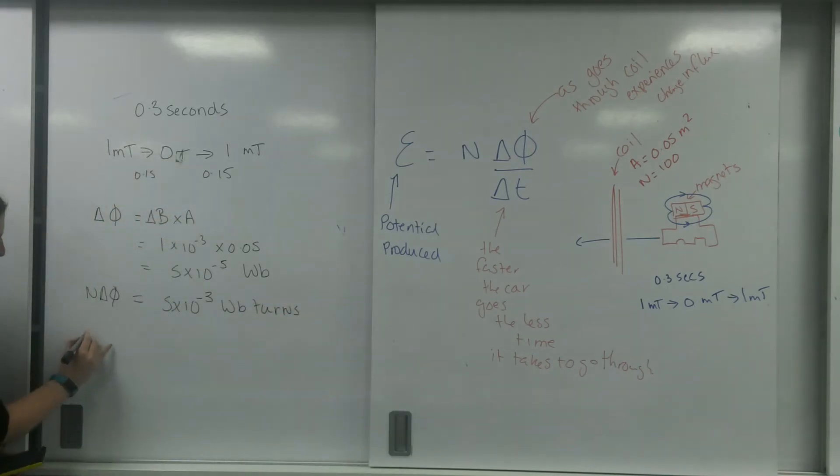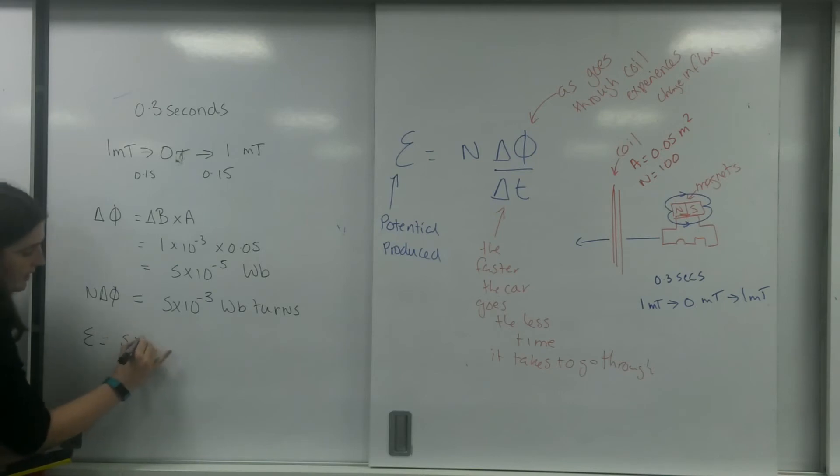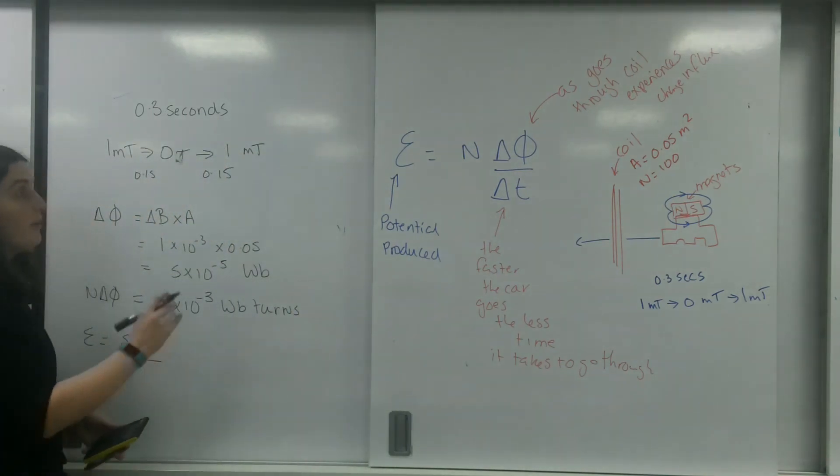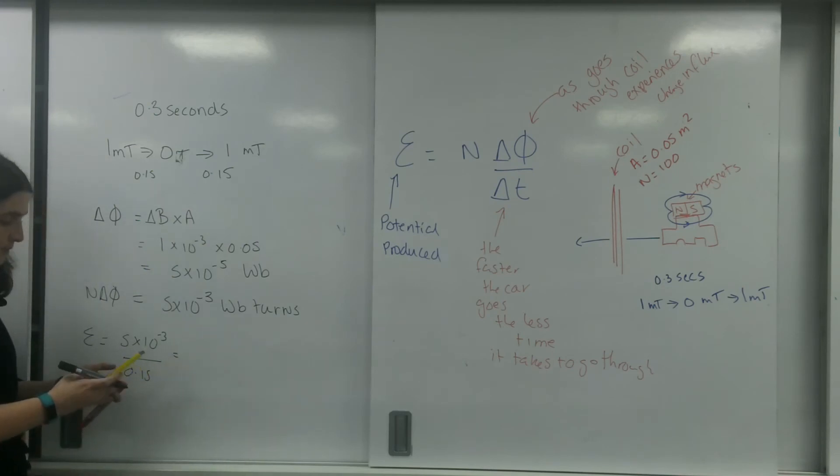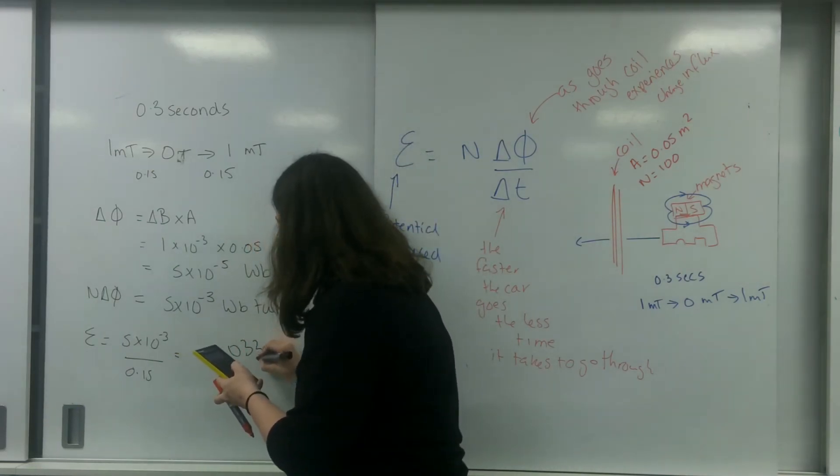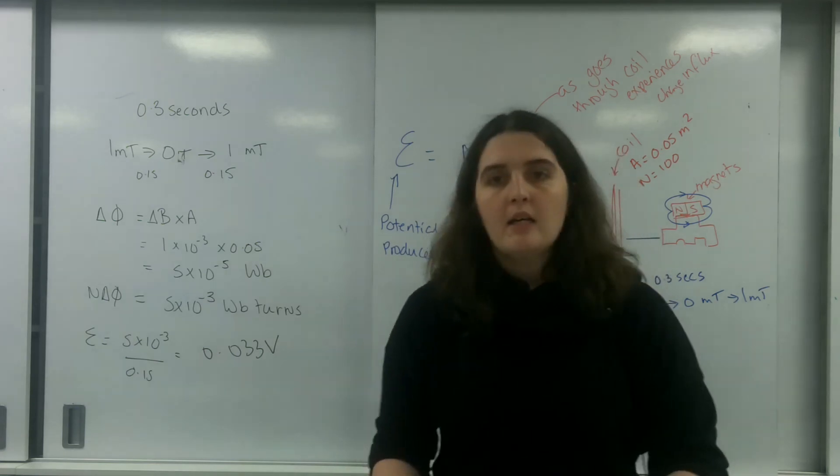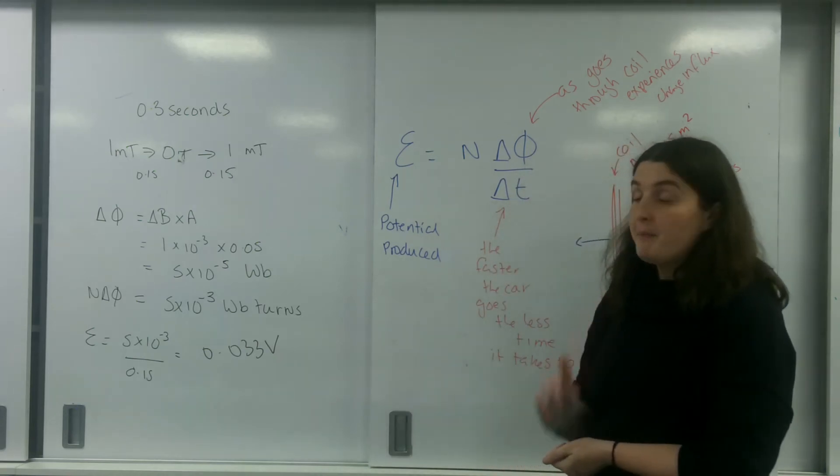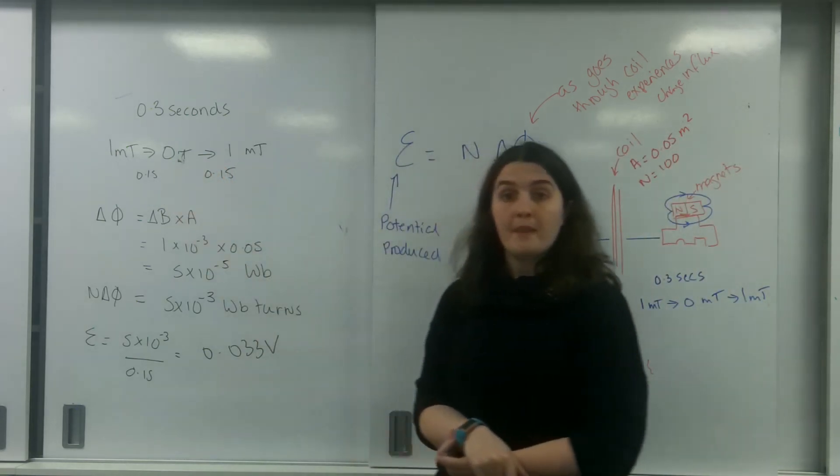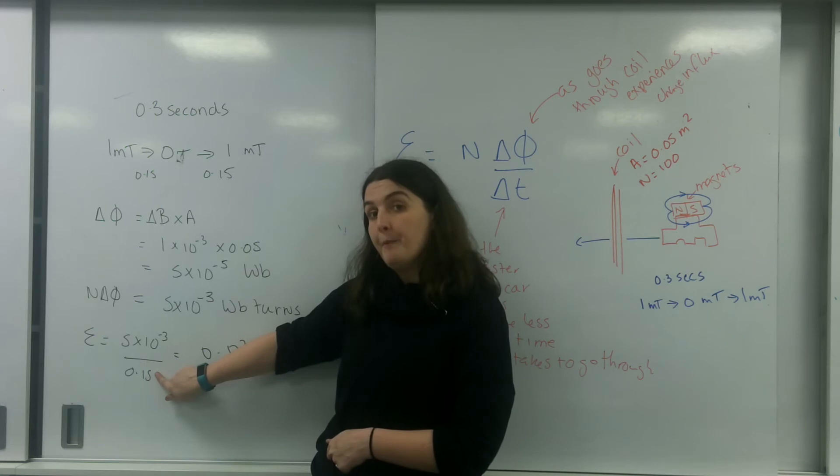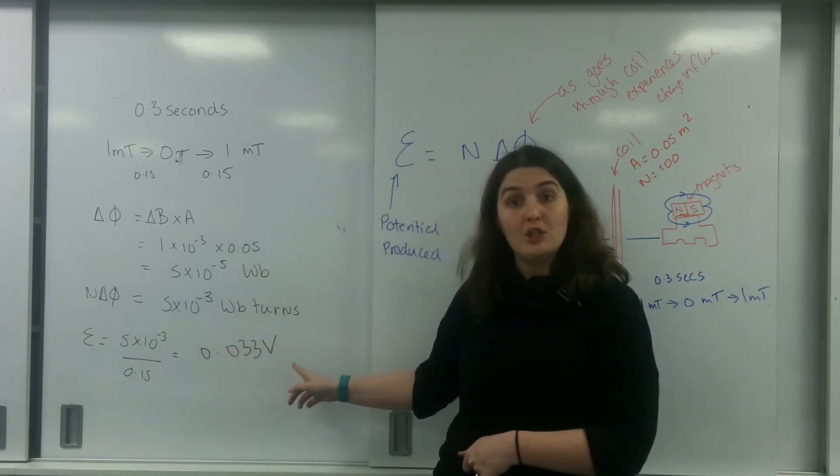So the EMF I would make would be 5 times 10 to the minus 3, so my change in flux linkage divided by my change in time, which took me 0.15 seconds. So the amount of potential difference I would make would be 0.033 volts. So that is my biggest potential difference because that is my biggest change in flux. Now if I was going faster, this number would be going smaller, which means I would generate more potential difference.